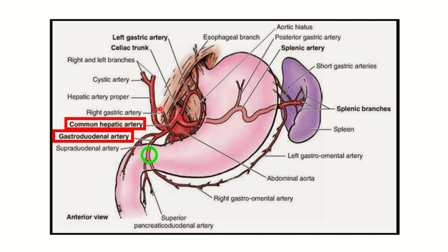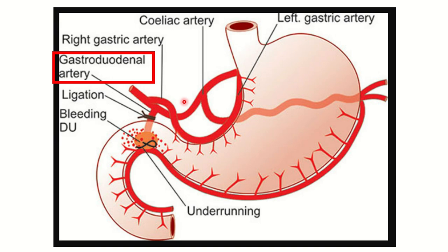The vascular hierarchy is as follows: abdominal aorta → celiac trunk → common hepatic artery → gastroduodenal artery. So the gastroduodenal artery is a branch of the common hepatic artery, which is a branch of the celiac trunk, which arises from the abdominal aorta. In this picture, with the anterior wall removed, we can see the bleeding occurring into the duodenal lumen, arising from this vessel.